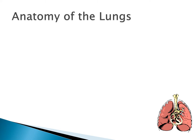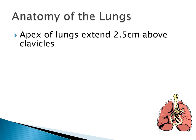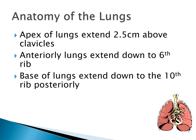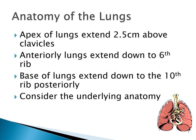A recap of lung anatomy helps us think about where we're placing the stethoscope and where we're actually listening. It's worth bearing in mind that the apex of the lungs extends roughly two and a half centimetres above the clavicles. If you want to listen to the apex, you need to place the stethoscope above the clavicles. Anteriorly the lungs extend down to the sixth rib, and posteriorly the base extends down to the tenth rib. We need to consider underlying anatomy — we don't want to be listening to a kidney if we're in the wrong place.